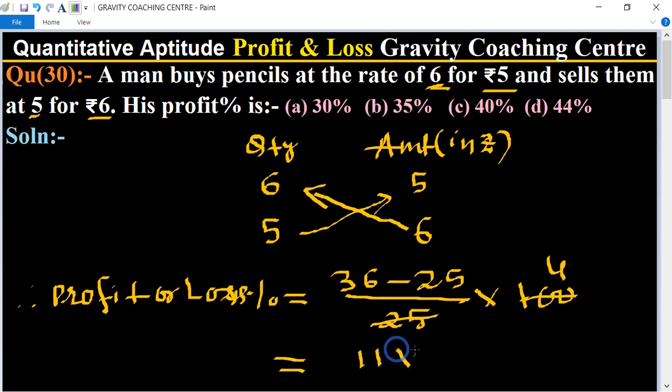11 into 4 equals 44, which is a positive number, so it is profit. The profit percent is 44%, so option D is the correct answer.